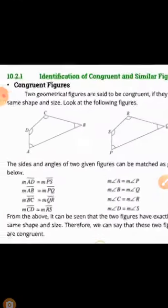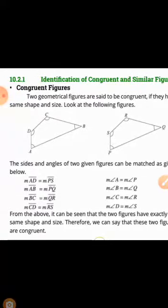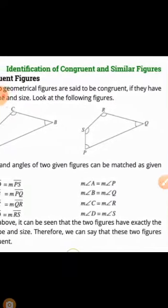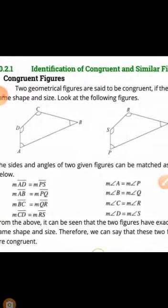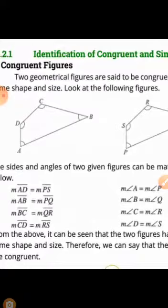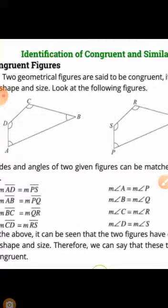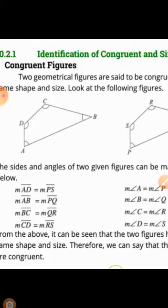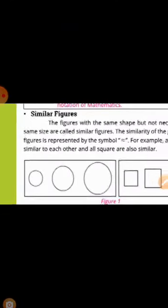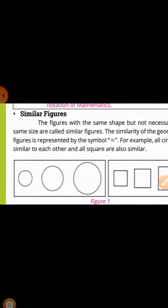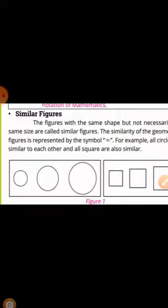اب Exercise 10.2 سے related congruent اور similar figures کی identification دیکھتے ہیں۔ Two geometrical figures are said to be congruent if they have the same shape and size۔ جیسے side AD = PS، AB = PQ، BC = QR، CD = RS۔ اسی طرح angle A = angle P، angle B = angle Q، angle C = angle R، angle D = angle S۔ تو جن دو figures کی shape بھی same ہو اور size بھی same ہو وہ congruent figures ہوتی ہیں۔